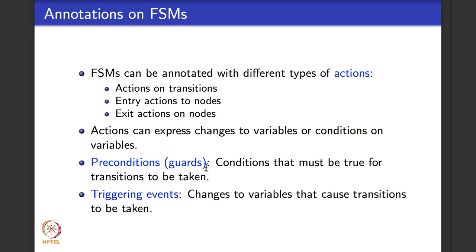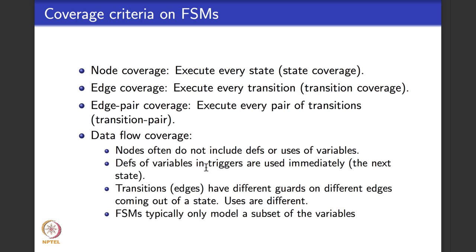Let's look at structural coverage criteria and see what they mean for finite state machines. The simplest is node coverage, which in the context of a finite state machine means execute every state — that makes a lot of sense when a machine models a design. Edge coverage means execute every transition, i.e., execute every state change. Edge pair coverage means execute every pair of transitions. Prime path coverage is not very useful here because we don't look at loops as they come from control flow graphs in finite state machines — specified path coverage would be more useful.